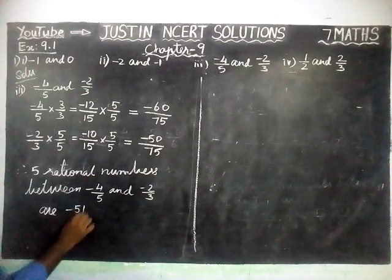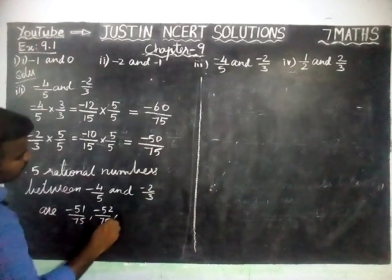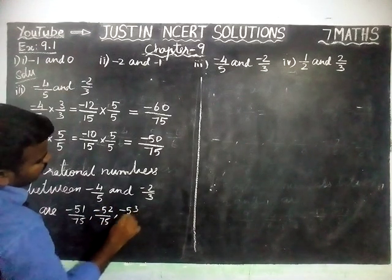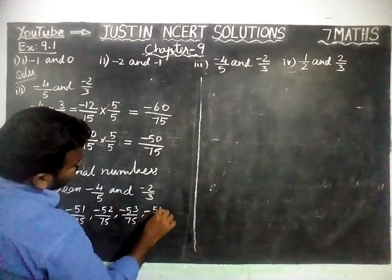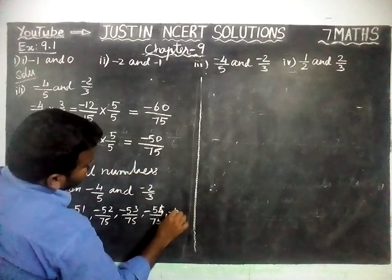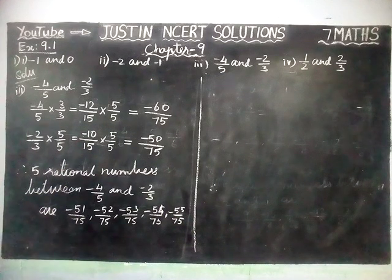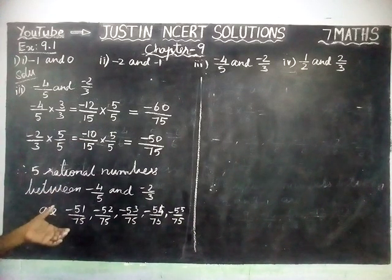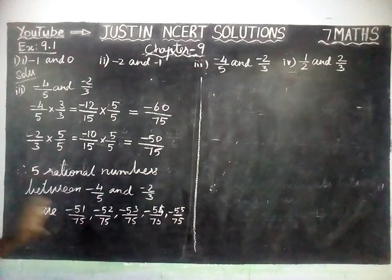Therefore, 5 rational numbers between minus 4 by 5 and minus 2 by 3 are: minus 51 by 75, minus 52 by 75, minus 53 by 75, minus 54 by 75, and minus 55 by 75. These are the 5 numbers between the 2 rational numbers. Again, this is not only the final answer — unlimited rational numbers are available and any 5 we can write.